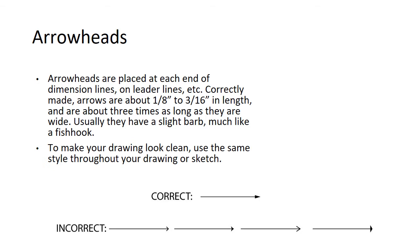Arrowheads. Arrowheads are placed at each end of a dimension line and they are touching, and they also go on leader lines, etc. Correctly made, arrowheads are about 1/8 of an inch to 3/16 of an inch in length and are about three times as long as they are wide. Usually they have a slight barb, much like a fish hook.